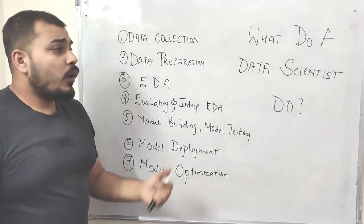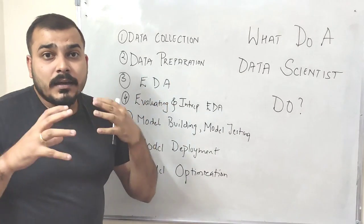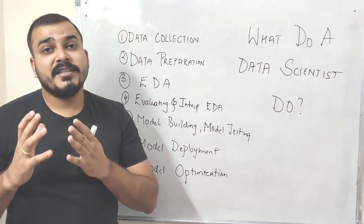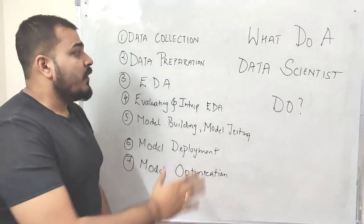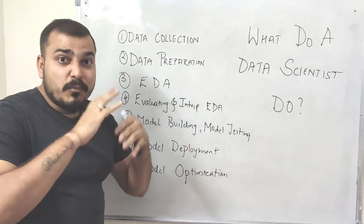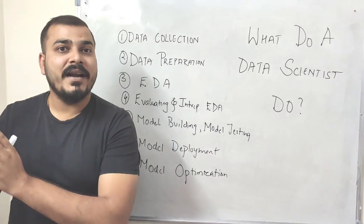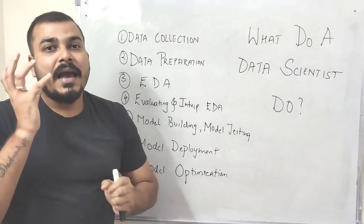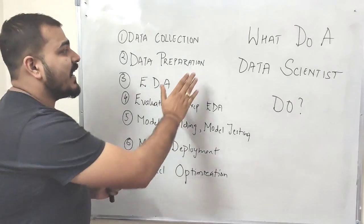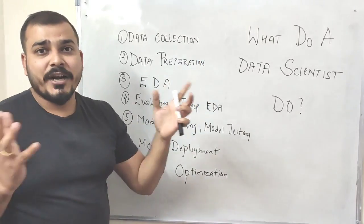In the second step, the team moves to data preparation. Data preparation means we try to clean the data, remove noise, and make it in a format that can easily be used for machine learning algorithms. Cleaning the data means taking raw data and making it ready for use.